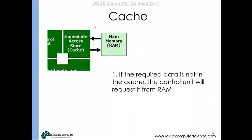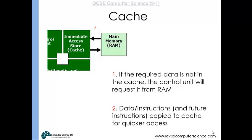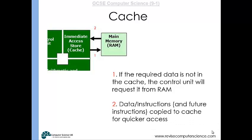If the required data is not in the cache, the control unit will request it from the RAM. Data, instructions, and future instructions are copied to the cache for quick access, so hopefully from then on it can maintain a quick rate.